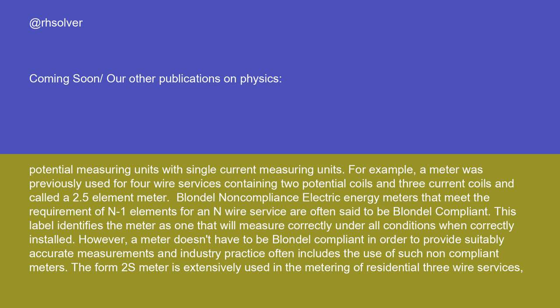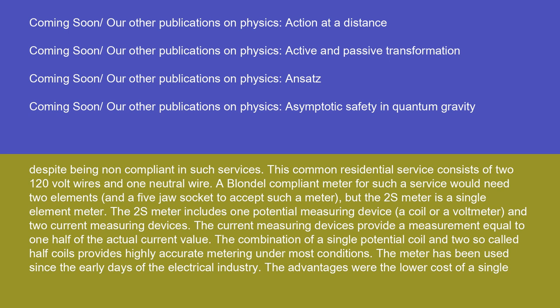This label identifies the meter as one that will measure correctly under all conditions when correctly installed. However, a meter doesn't have to be Blondel compliant in order to provide suitably accurate measurements, and industry practice often includes the use of such non-compliant meters. The Form 2S meter is extensively used in the metering of residential three-wire services, despite being non-compliant in such services.